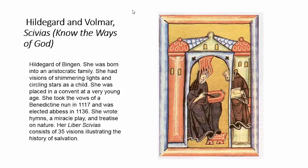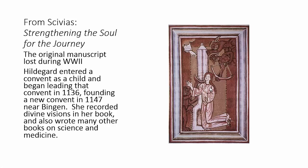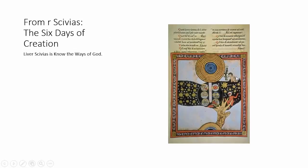Here's a closer view showing the tongues of flame entering her head — the divine flames of wisdom. Her Scivias consists of 35 visions illustrating the history of salvation. This is the opening page, where Hildegard describes tongues of fire permeating her brain. The architectural space is very much like Ottonian manuscripts, with a shallow but bold gold background that we've seen as far back as Byzantine manuscripts. Hildegard wrote many books besides this one — books on science and medicine. She was well-educated and learned. Here are the six days of creation.